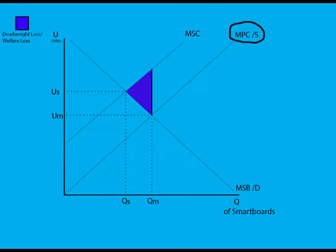The marginal private cost line represents the costs incurred by our high school for using smart boards in classrooms.